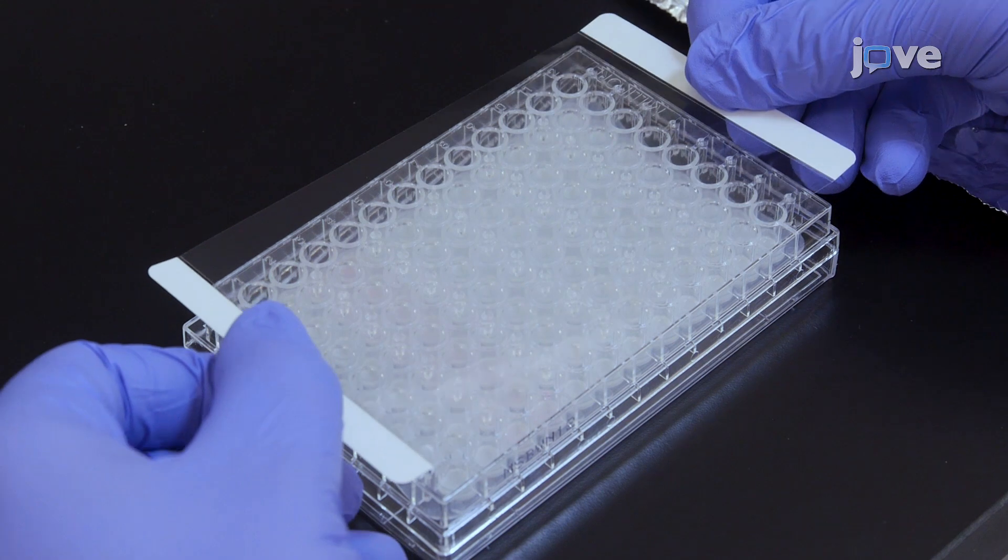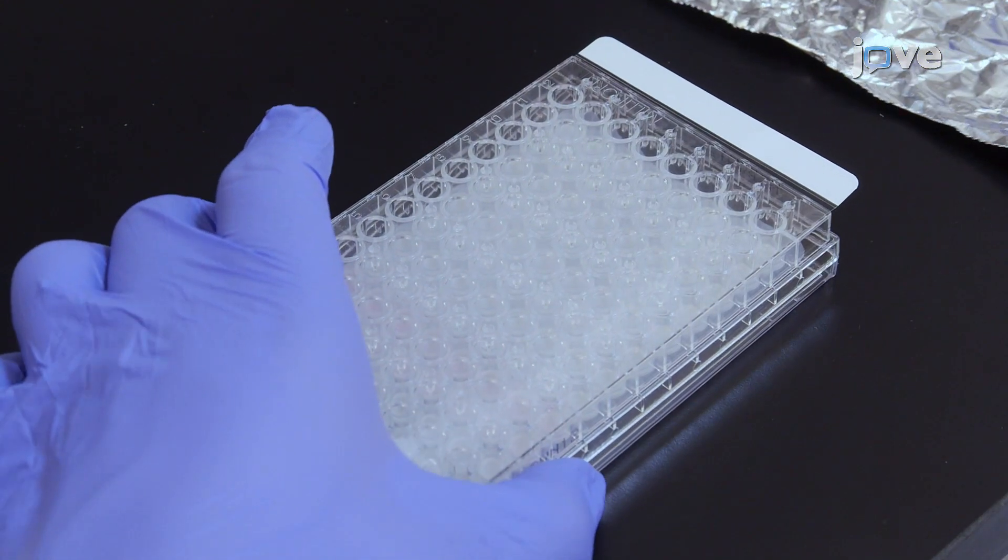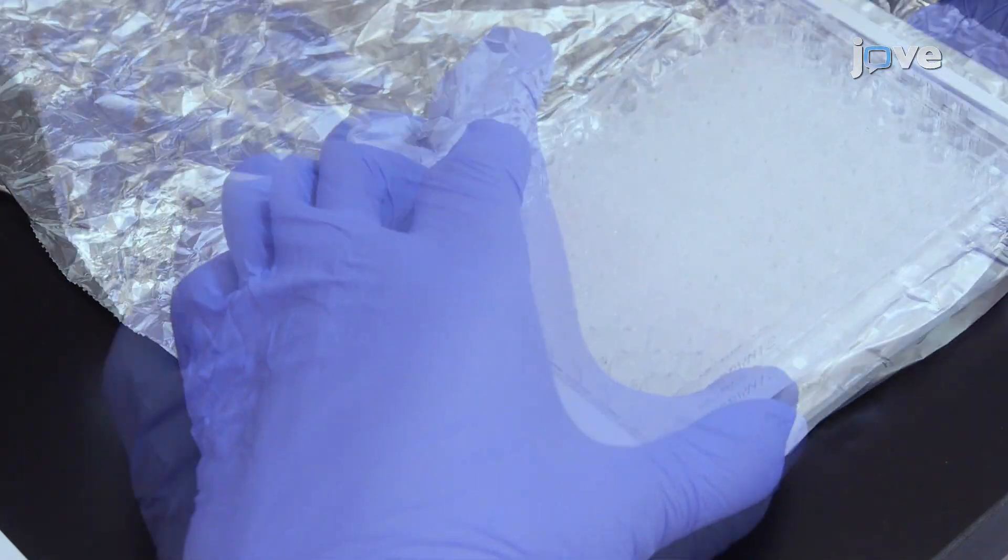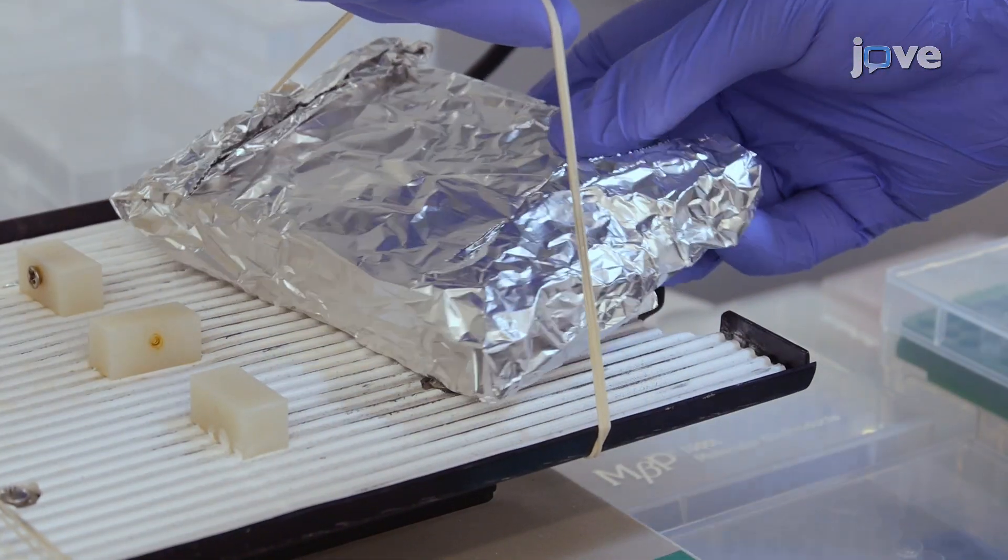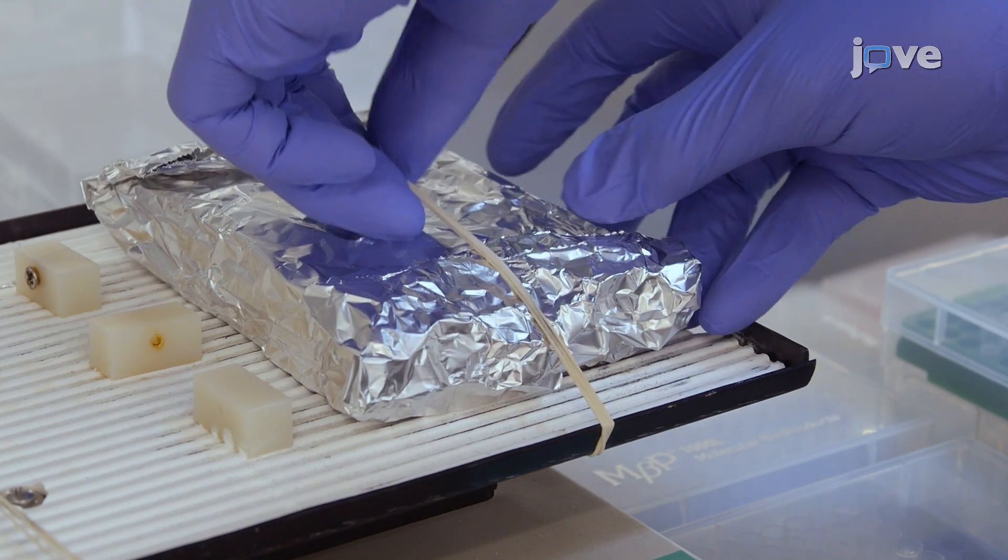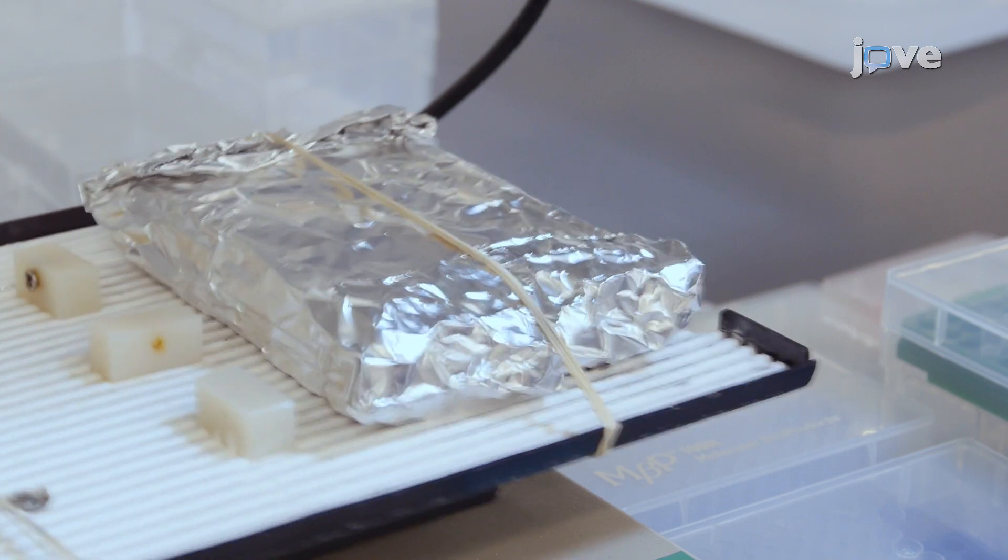Seal the plate with the plate sealer. Once sealed, wrap the entire plate, including the inverted plate cover, with aluminum foil. Place the plate on a plate shaker, secure it, and shake at approximately 500 RPM for 2 hours at room temperature.